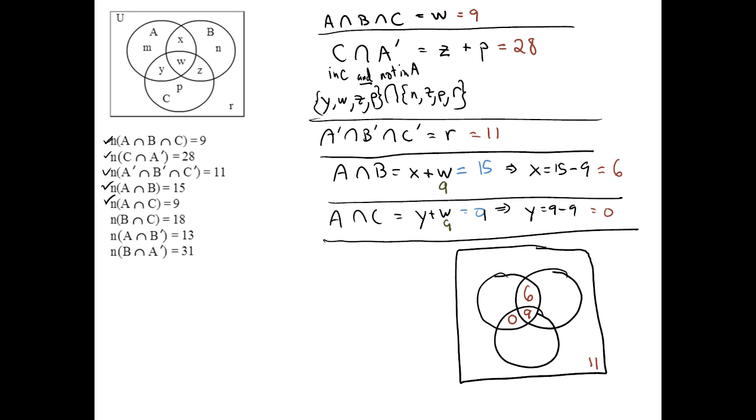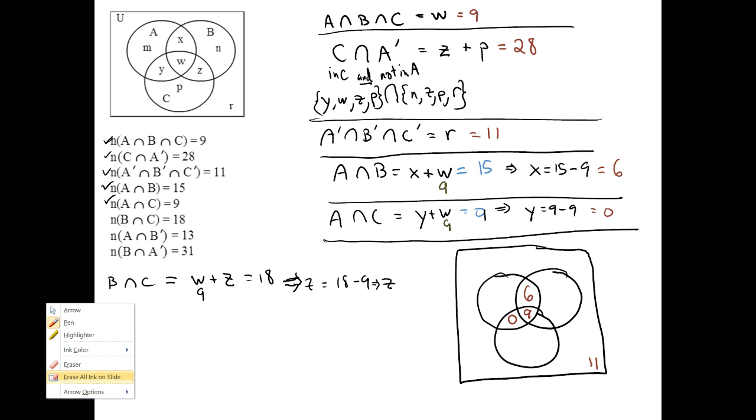Just continue on. Now we have B intersect C. The overlap between B and C is W and Z. But we already know W is 9. Together, they're supposed to be equal to 18. So Z is 18. This means that Z is 18 minus the 9. Therefore, we get that Z is also equal to 9. Where's Z at? Right there. That should also be a 9.